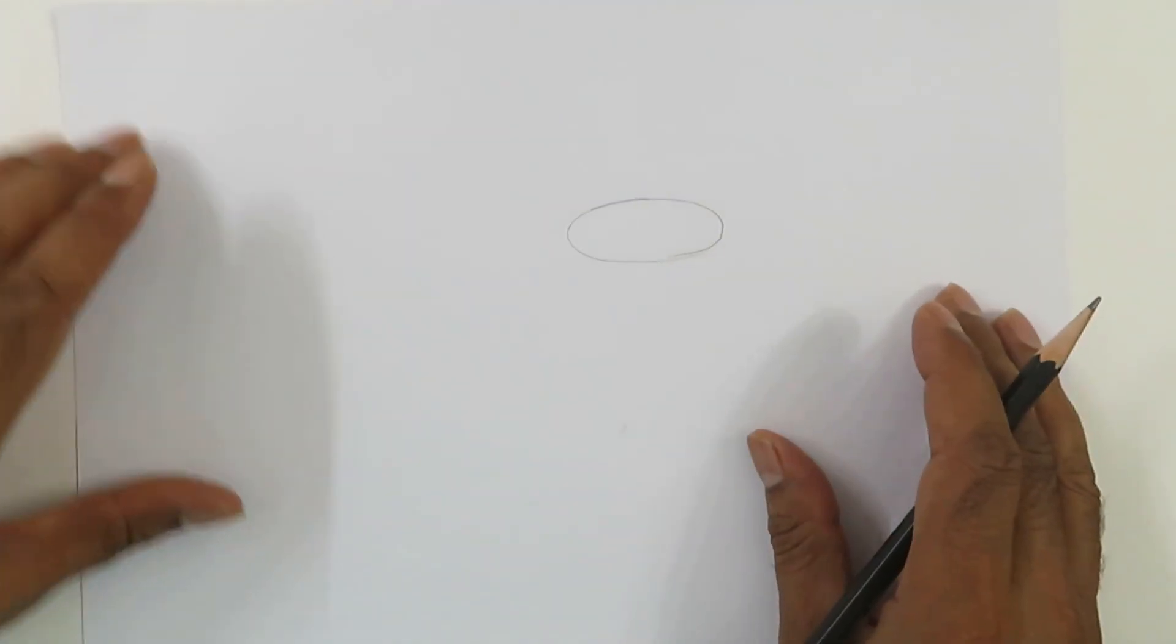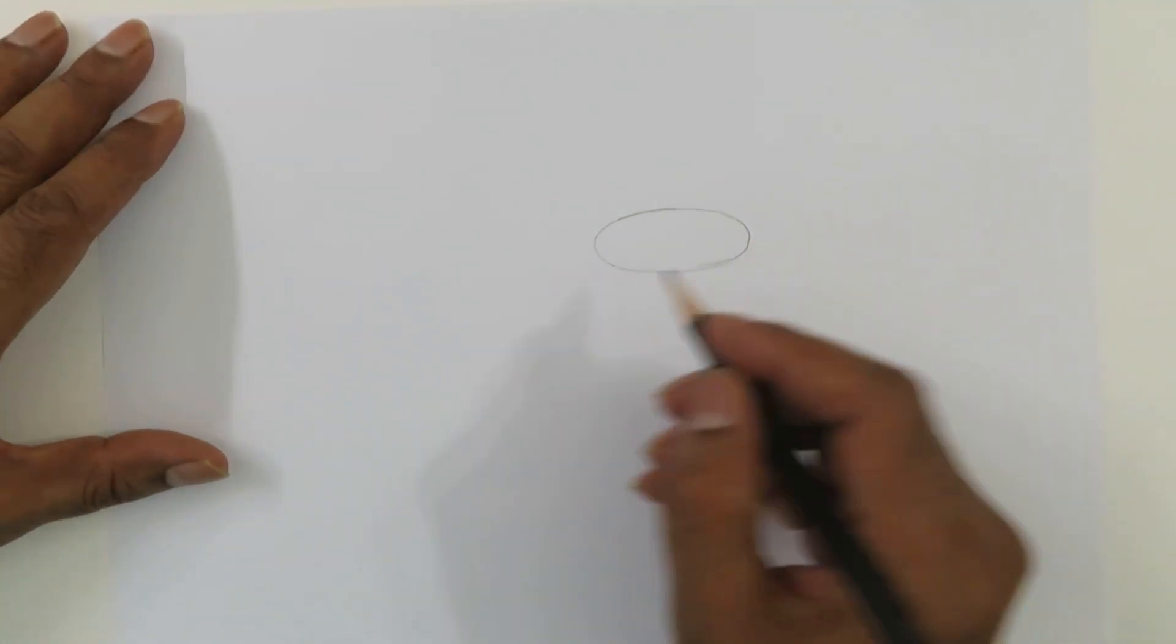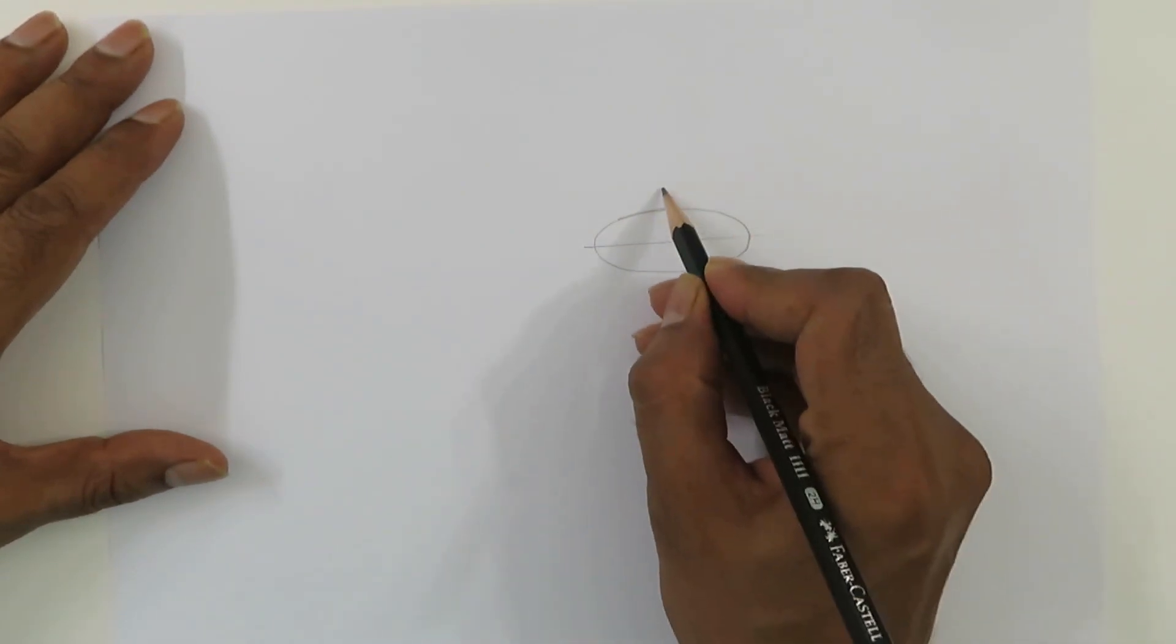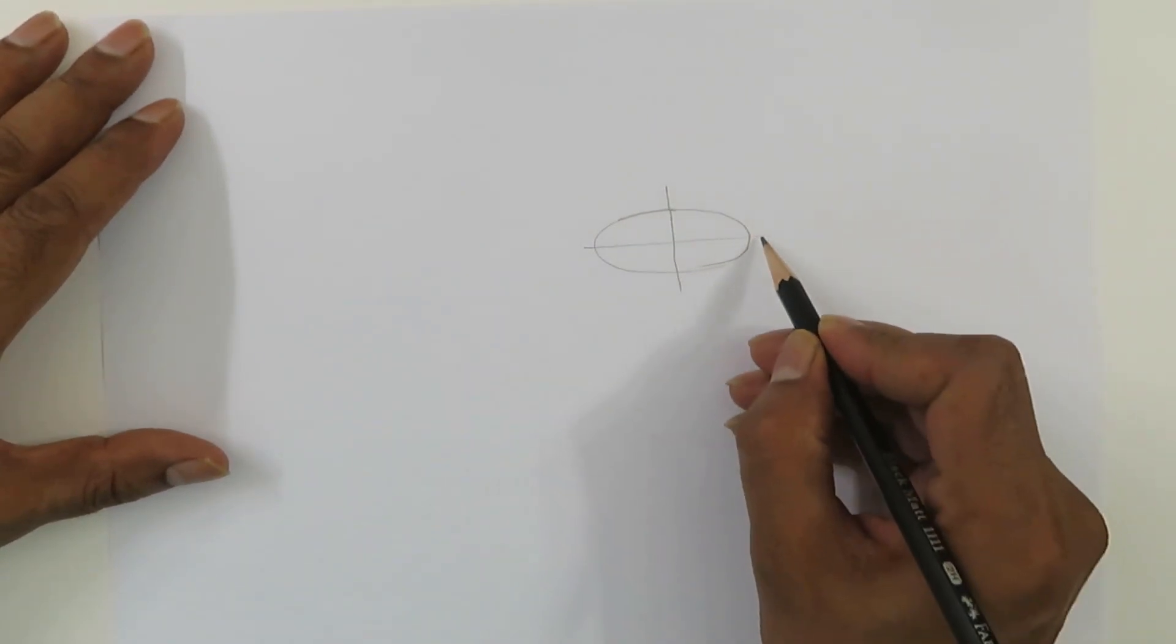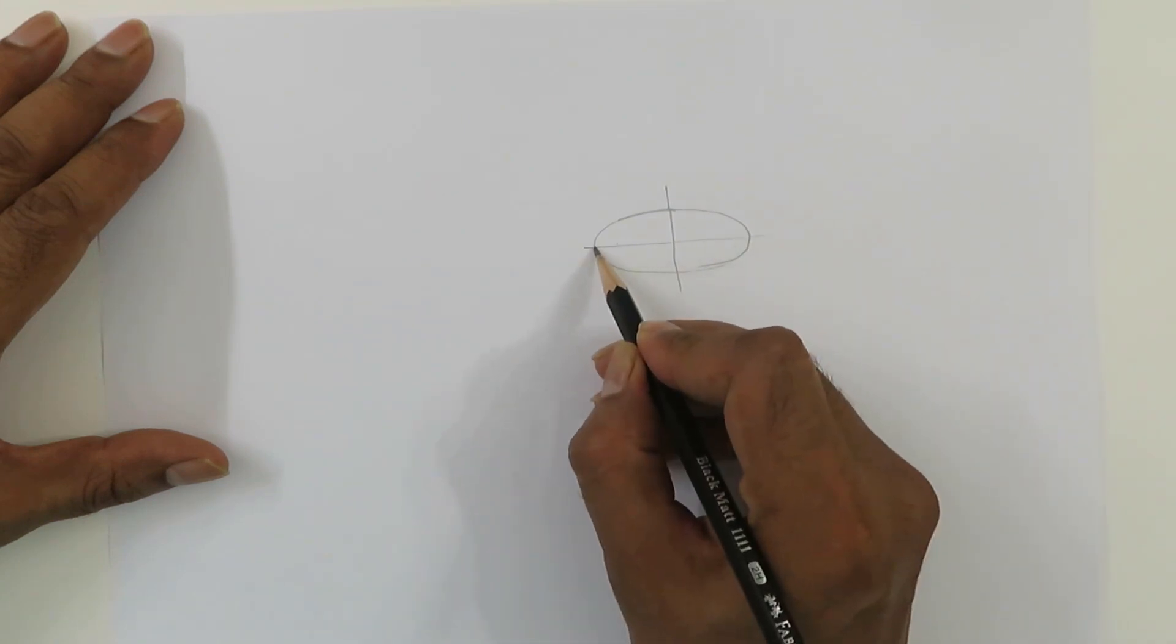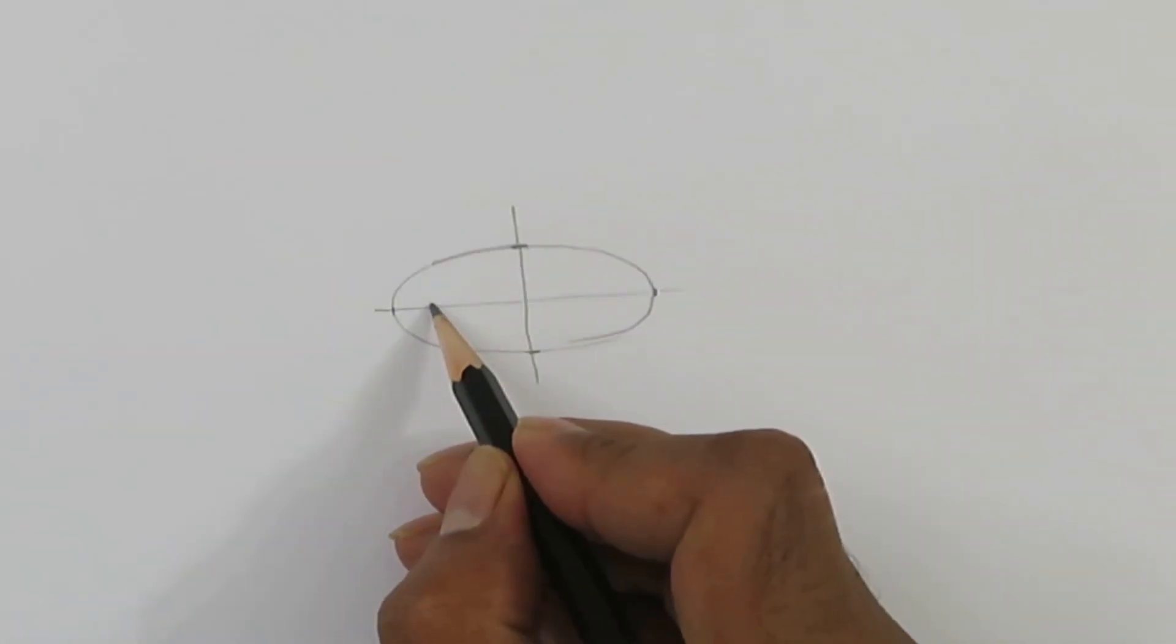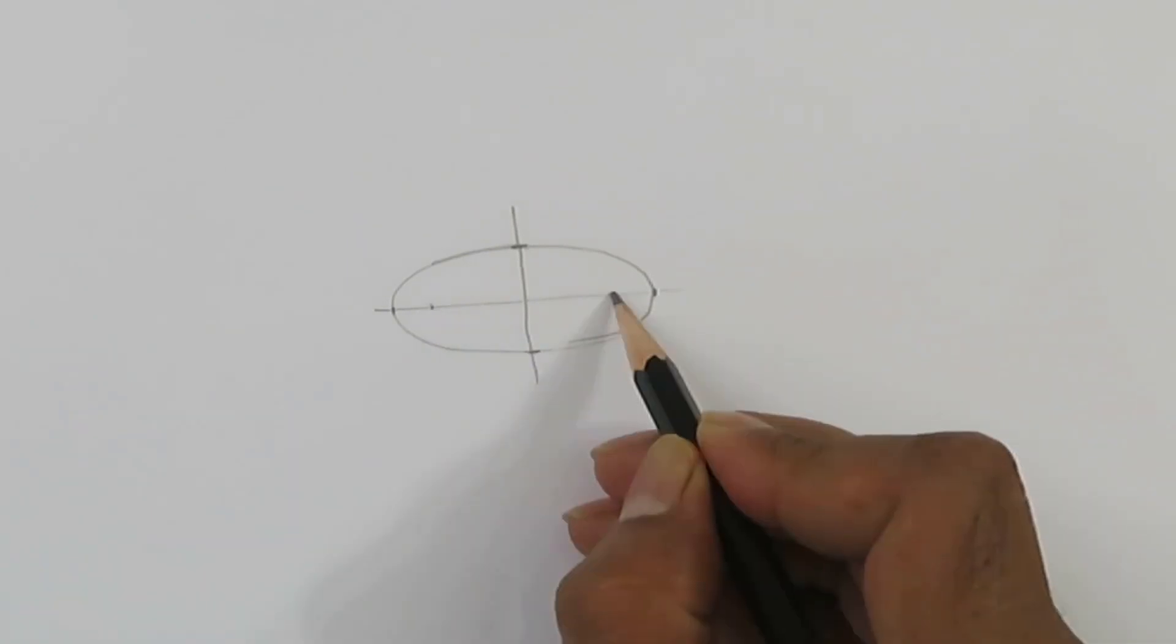Before we start, let me show you a property of ellipse. An ellipse shape is something like this, and if we divide this like this, this is called major axis and this is the minor axis. There is a point which is called focus on both sides.